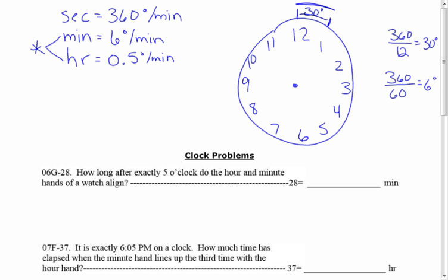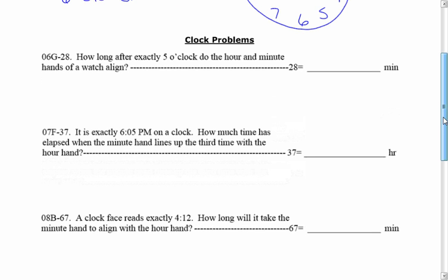Since all the hands are moving together at the same time and in the same direction, you're going to be subtracting your rates to get your relative rate. So if you have your minute and hour hand moving together, you do 6 minus 0.5 and their relative rate is 5.5 degrees per minute.